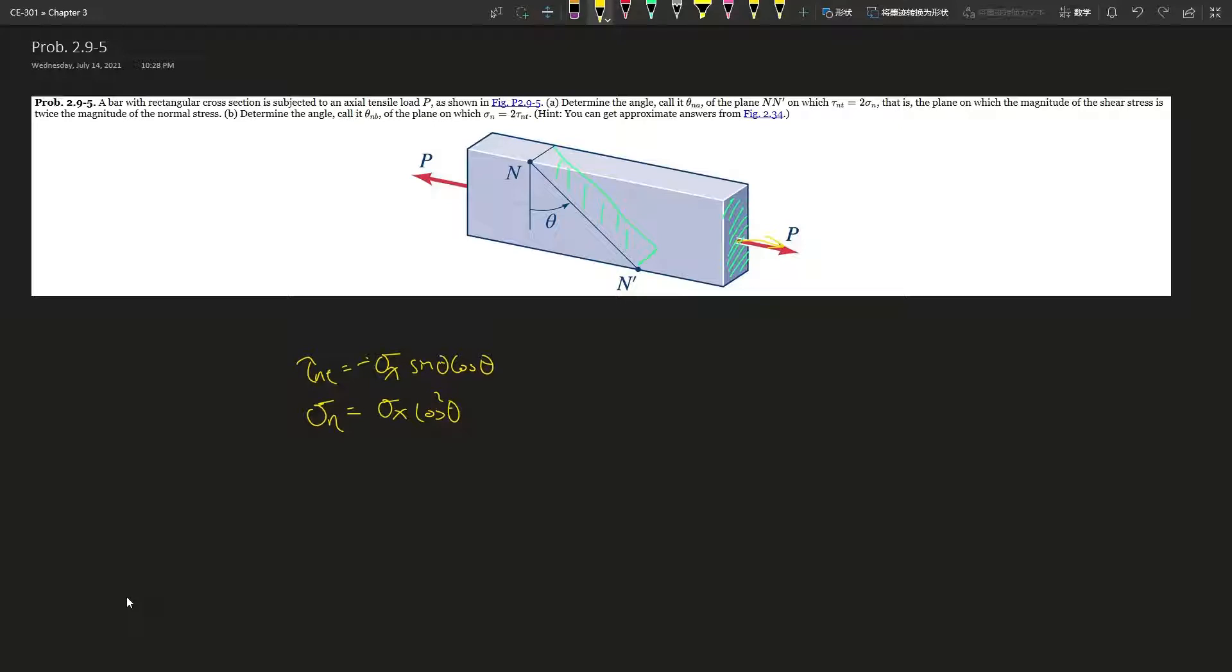Determine the angle theta n a of the plane n' on which tau nt equals two sigma n. That is the plane on which the magnitude of the shear stress is twice the magnitude of the normal stress, and part B is the reverse of A.